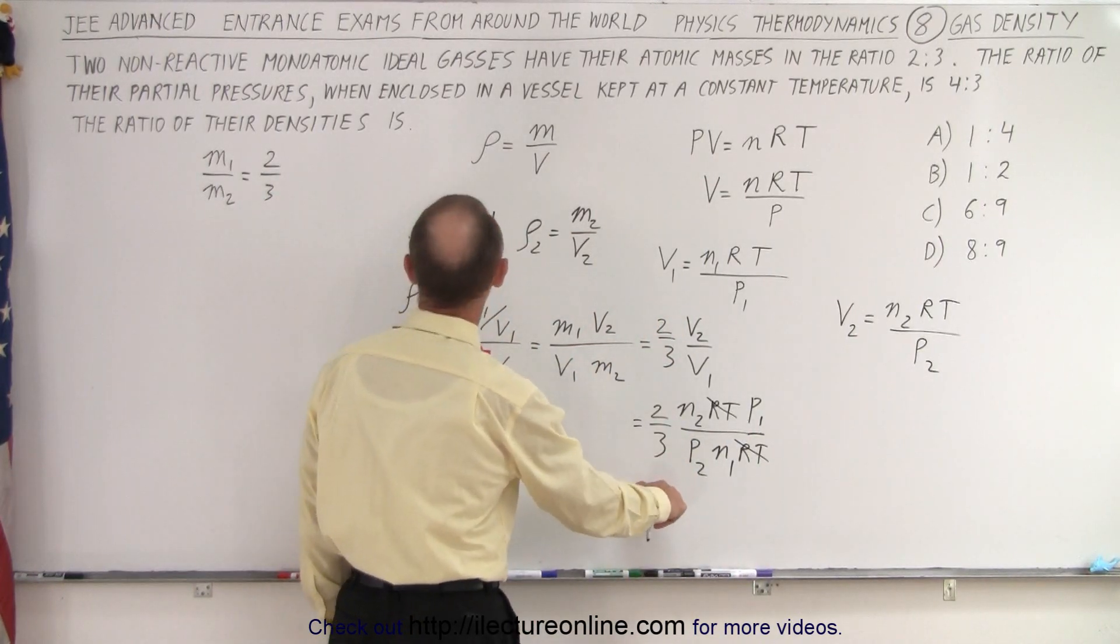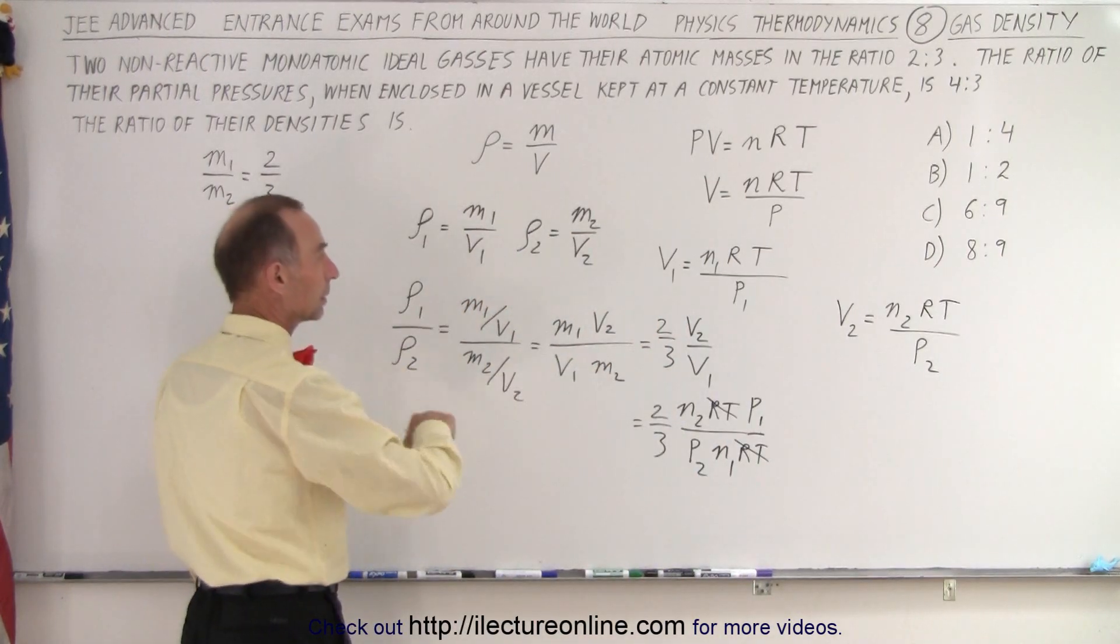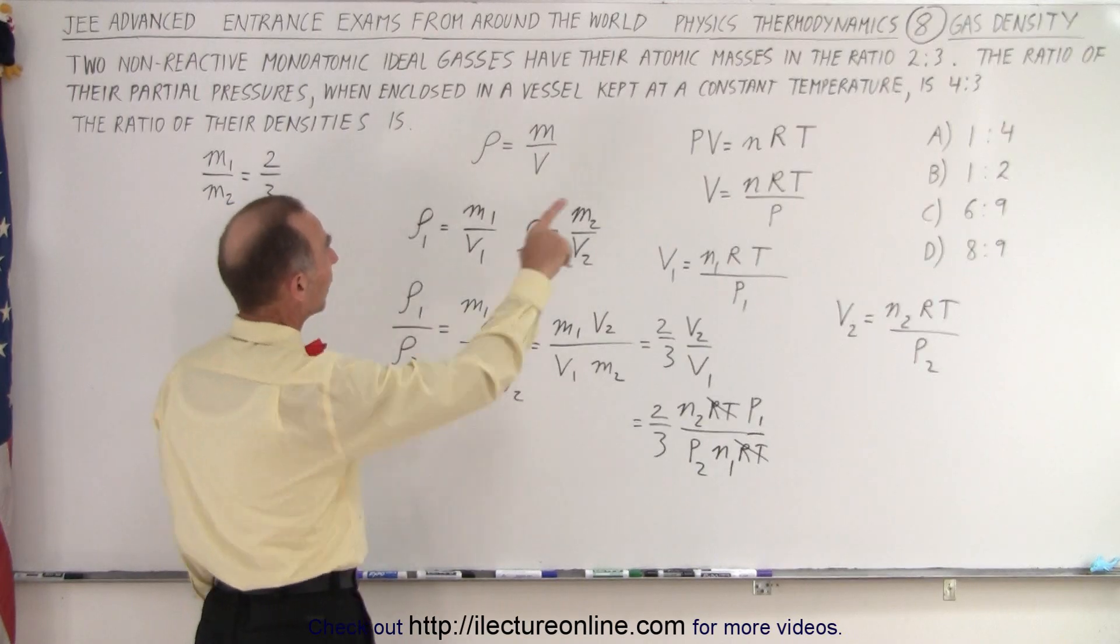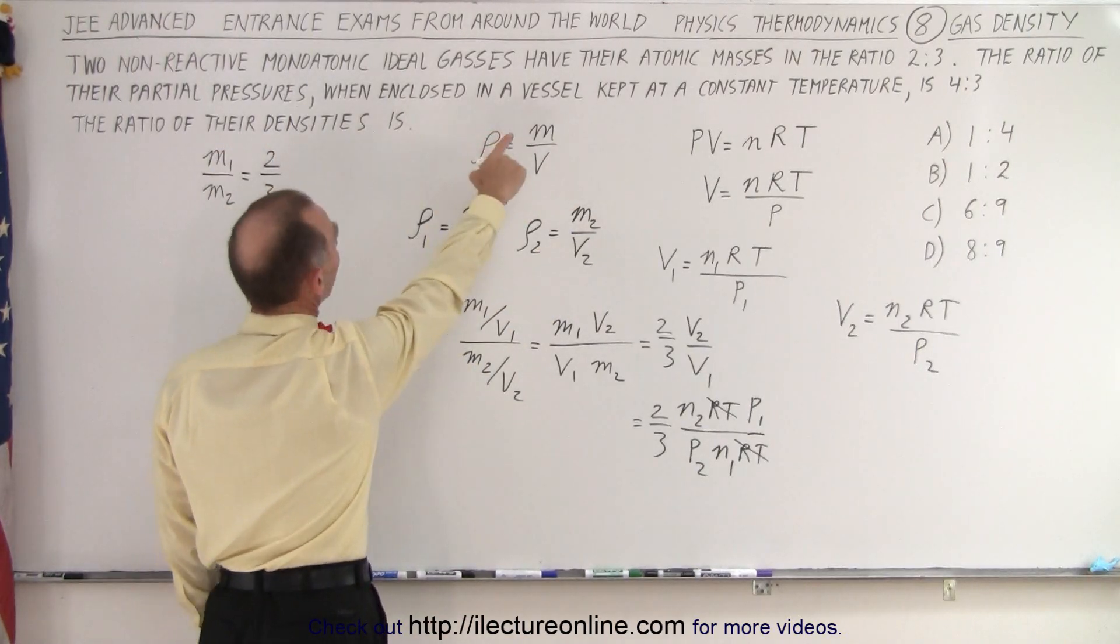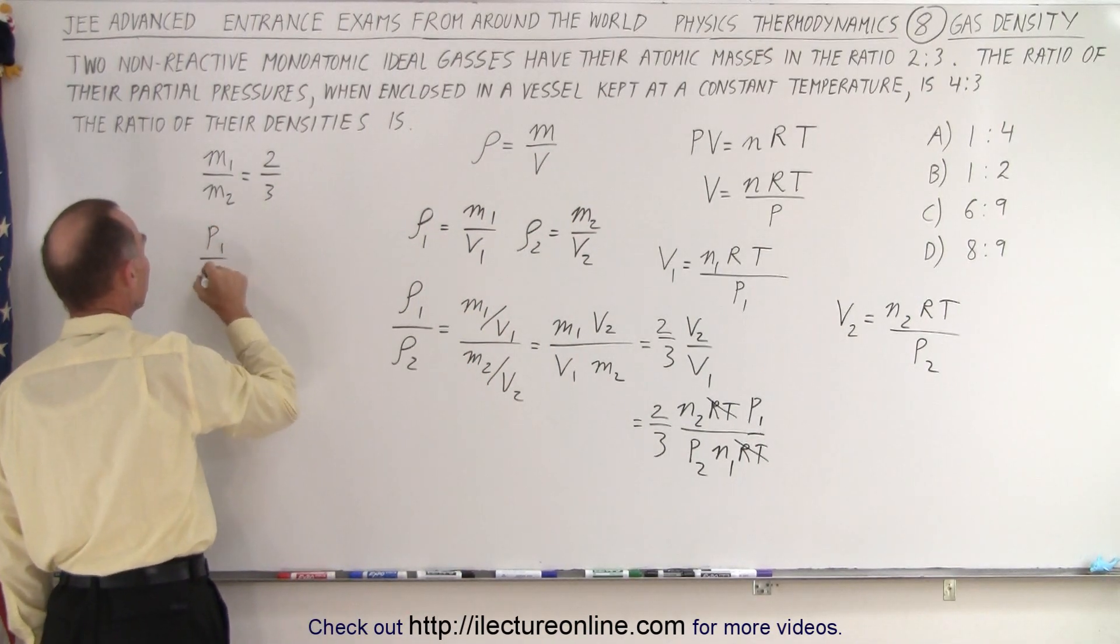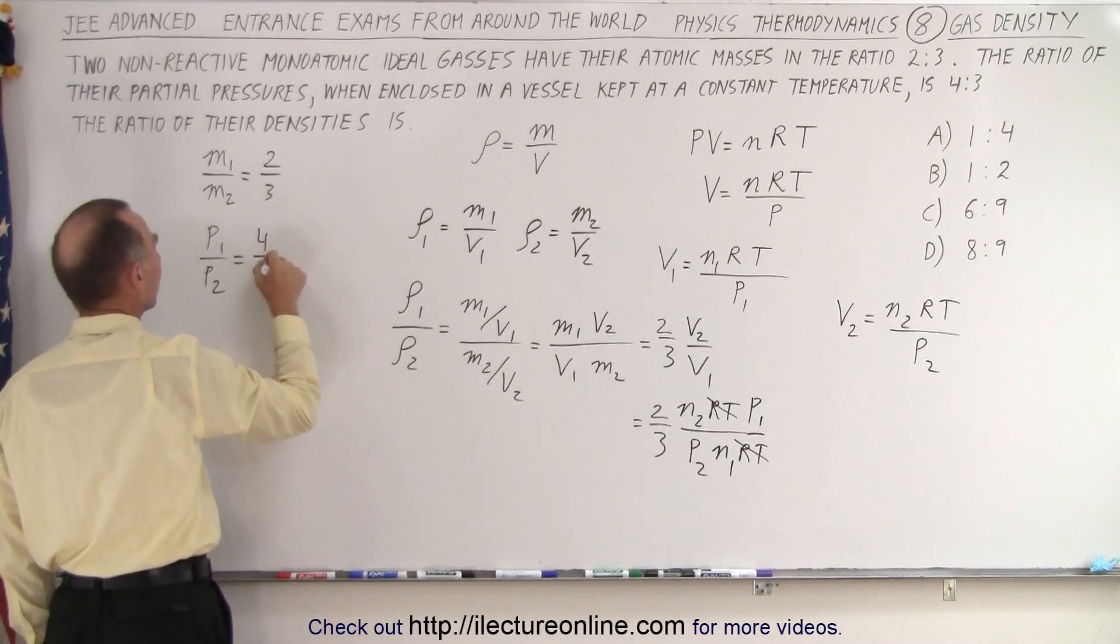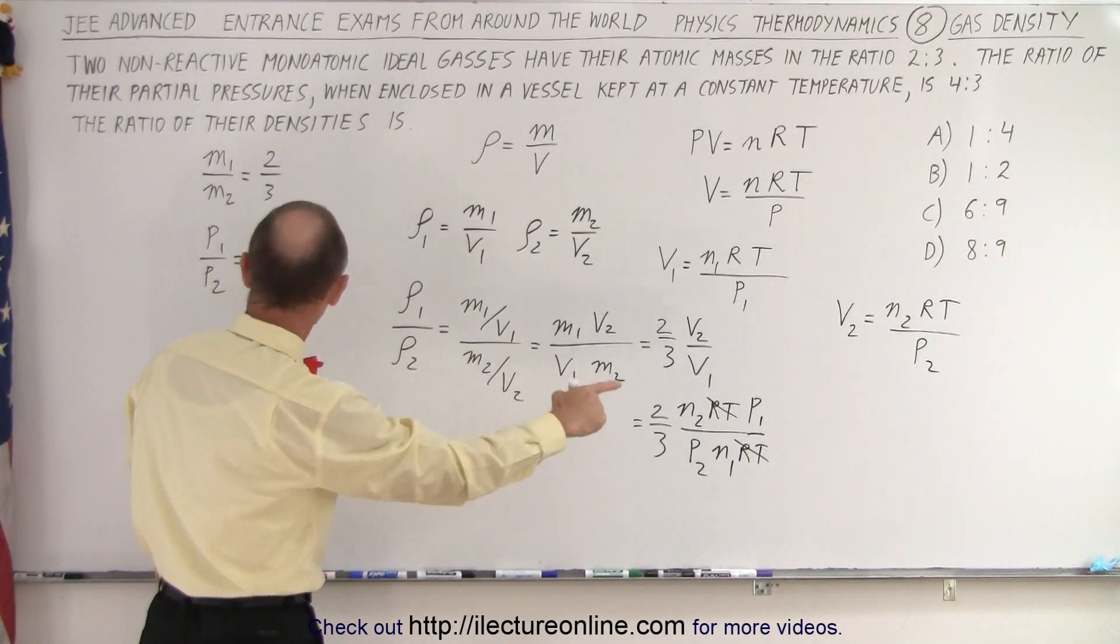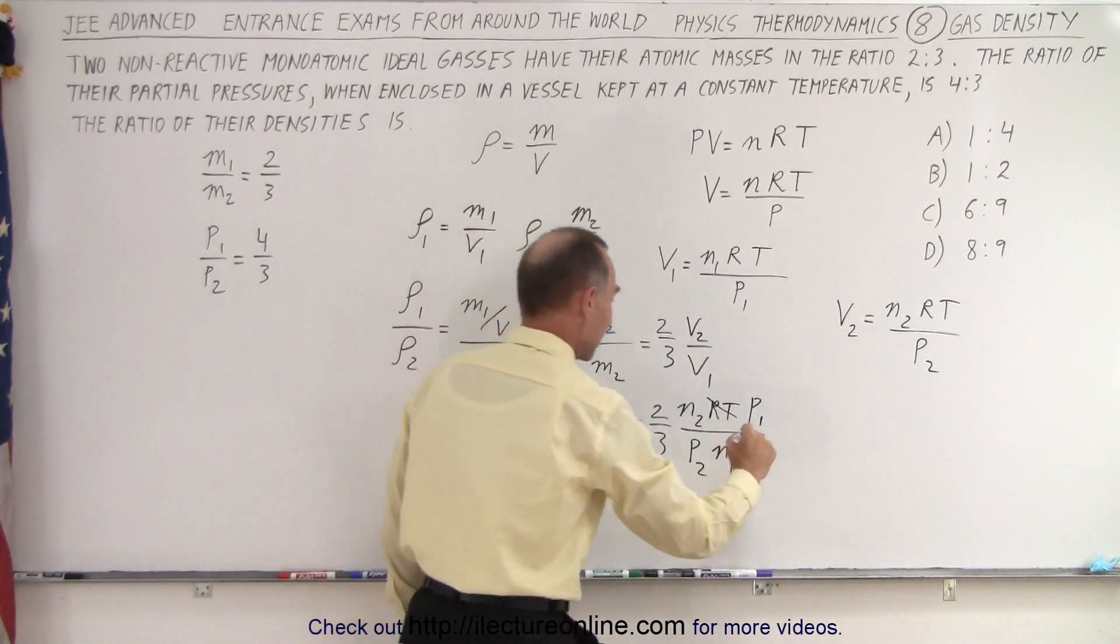And P1 over P2. Let's see here. Do we have that? Partial pressures. P1 divided by P2. So we can say that P1 divided by P2 is equal to 4 divided by 3. And so we can replace 4 divided by 3 here.